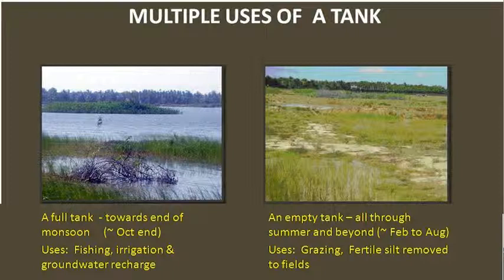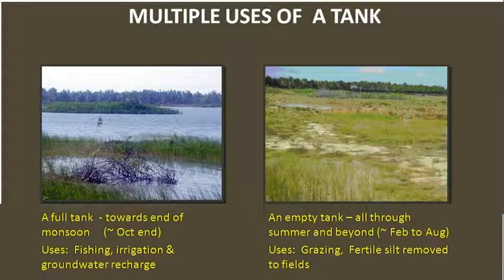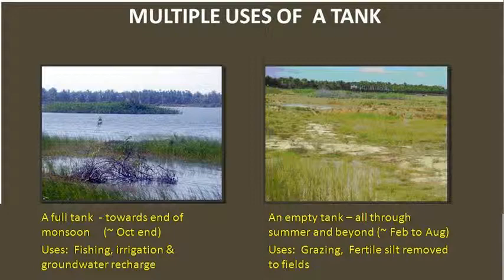This is just to get an idea of what a tank actually looks like. This is a medium-sized tank. When the tank is full, which happens towards the end of October generally, you'll see something like this — it is used for fishing, irrigation, and also groundwater recharge. The uses of the tank have changed over time. In earlier days, you could grow paddy just below the tank — the only way to grow paddy in this semi-arid region. But now, paddy cultivation has been given up and the tank is very important for recharging borewells. There are about 100 to 150 borewells around this tank, and if the tank fills up one year, those borewells will not lose their water for another two years.